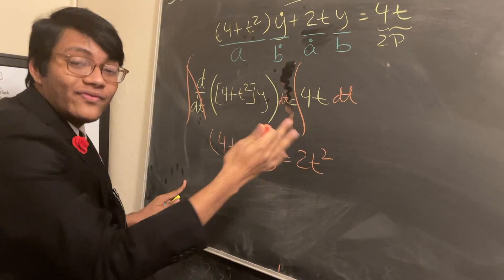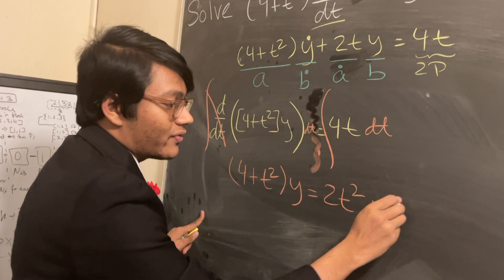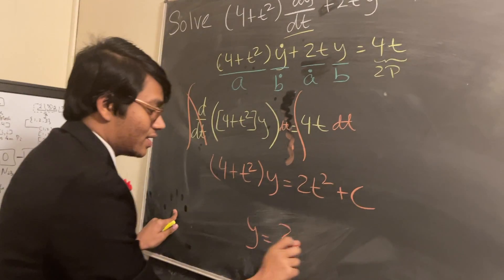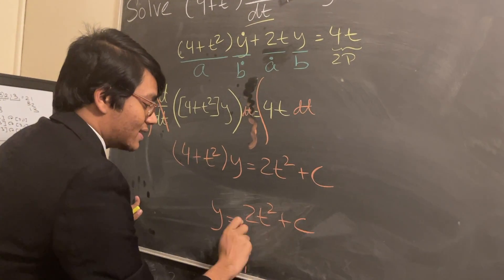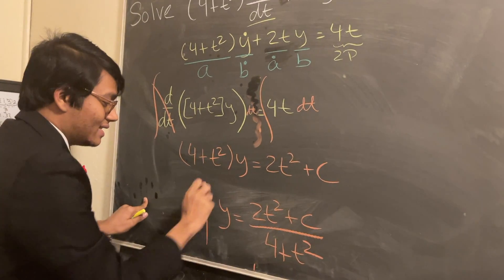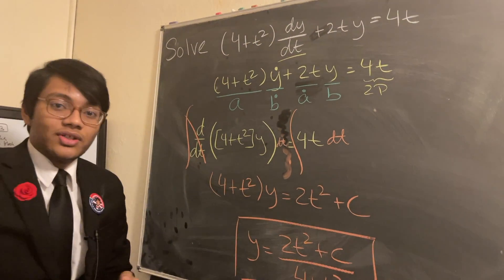But don't forget, there's an infinite number of functions whose integral is 2t². So you have to add that constant value. And so now we're just solving for y, we're left over with y = (2t²+c)/(4+t²). And this is the family of functions whose derivative gives you this differential equation.